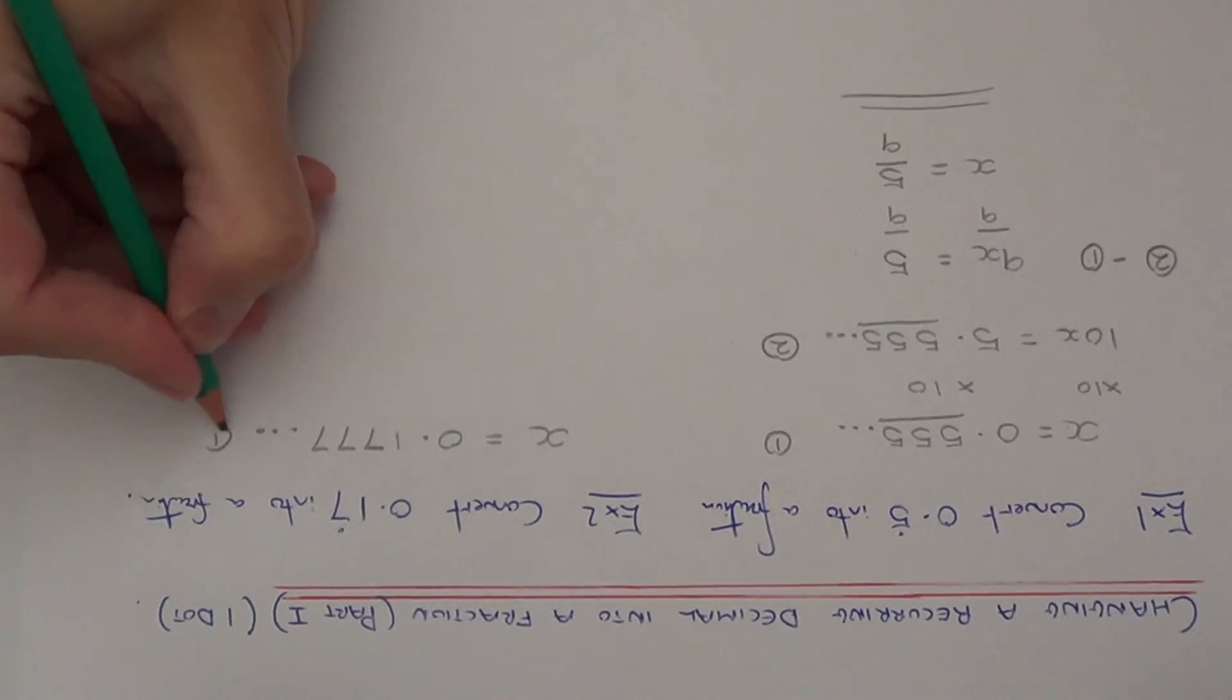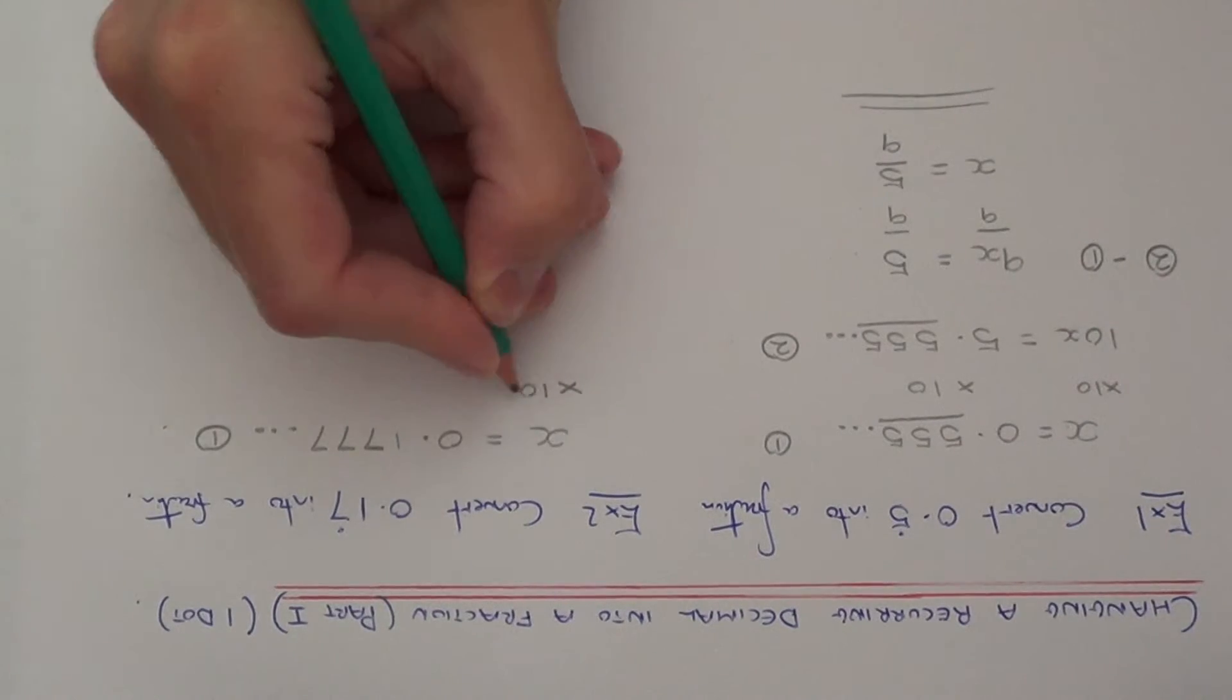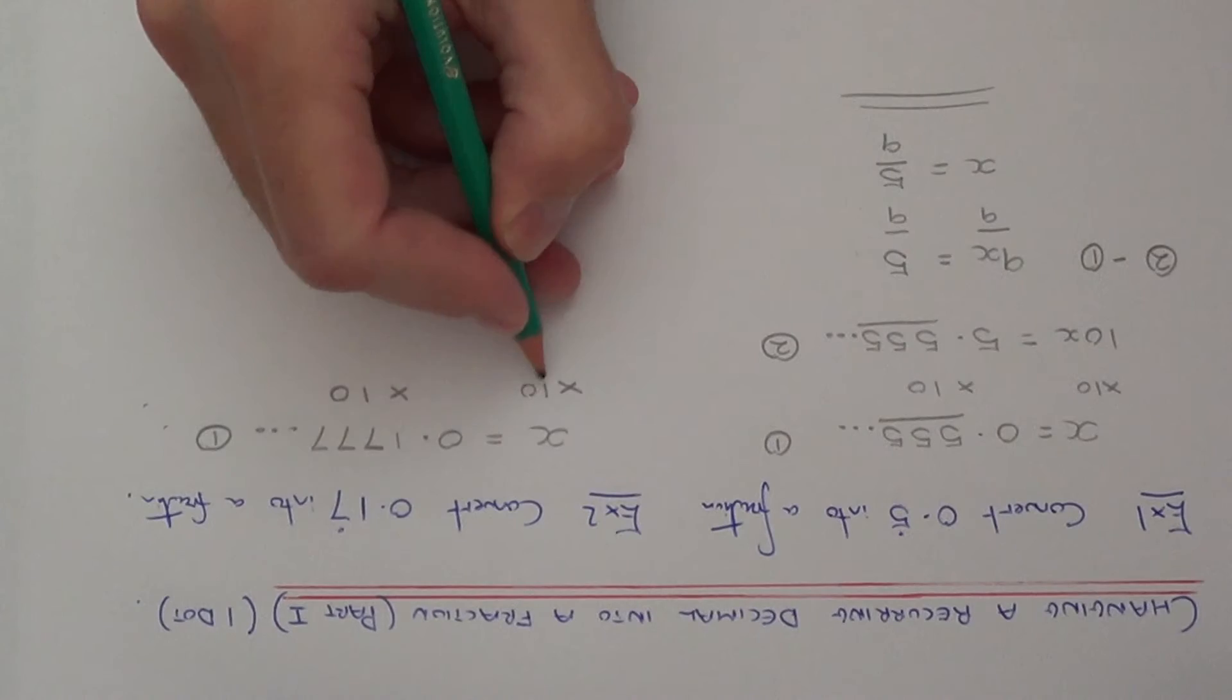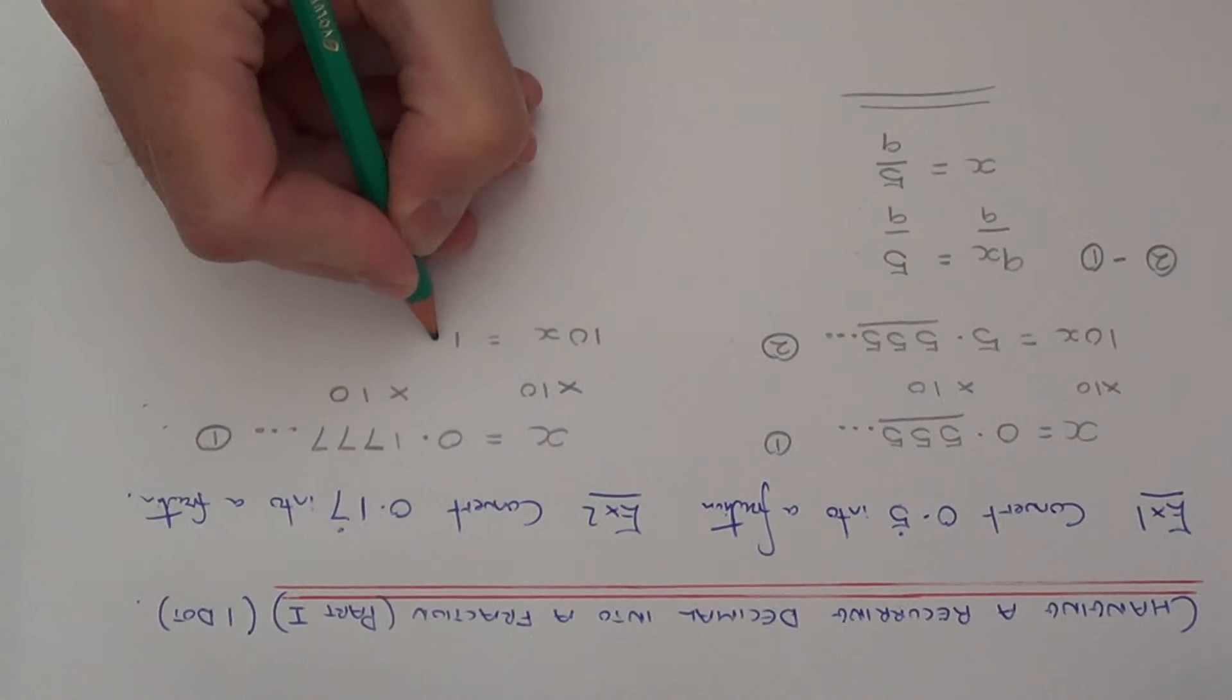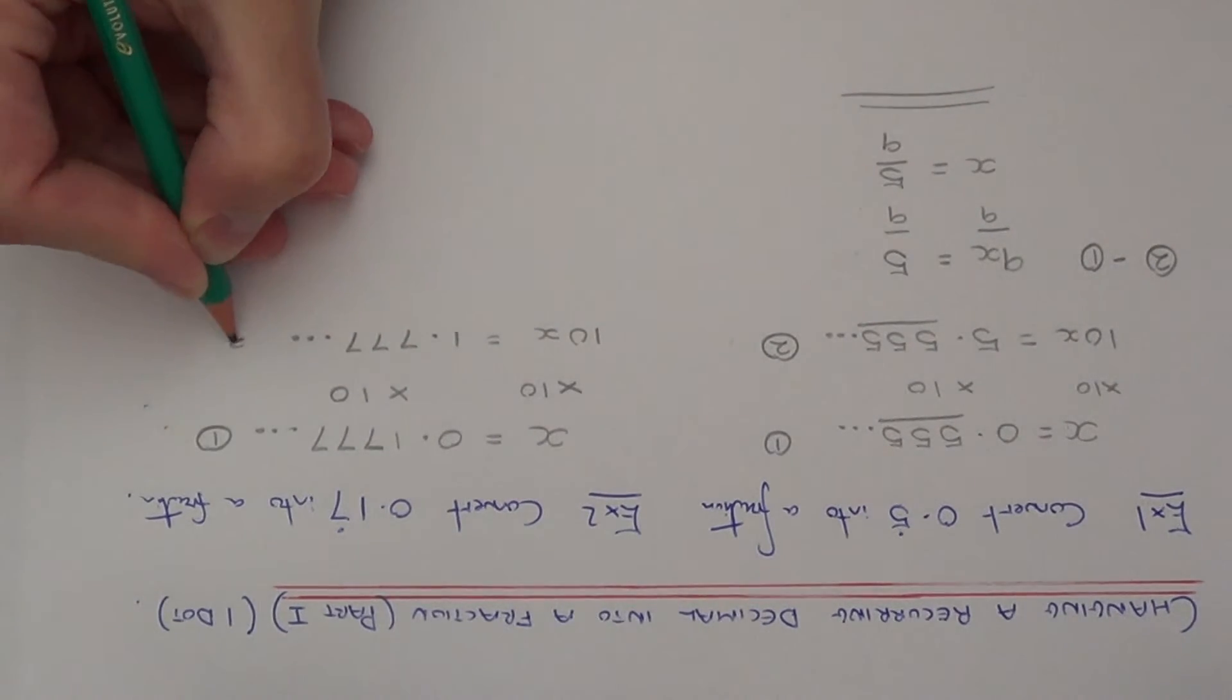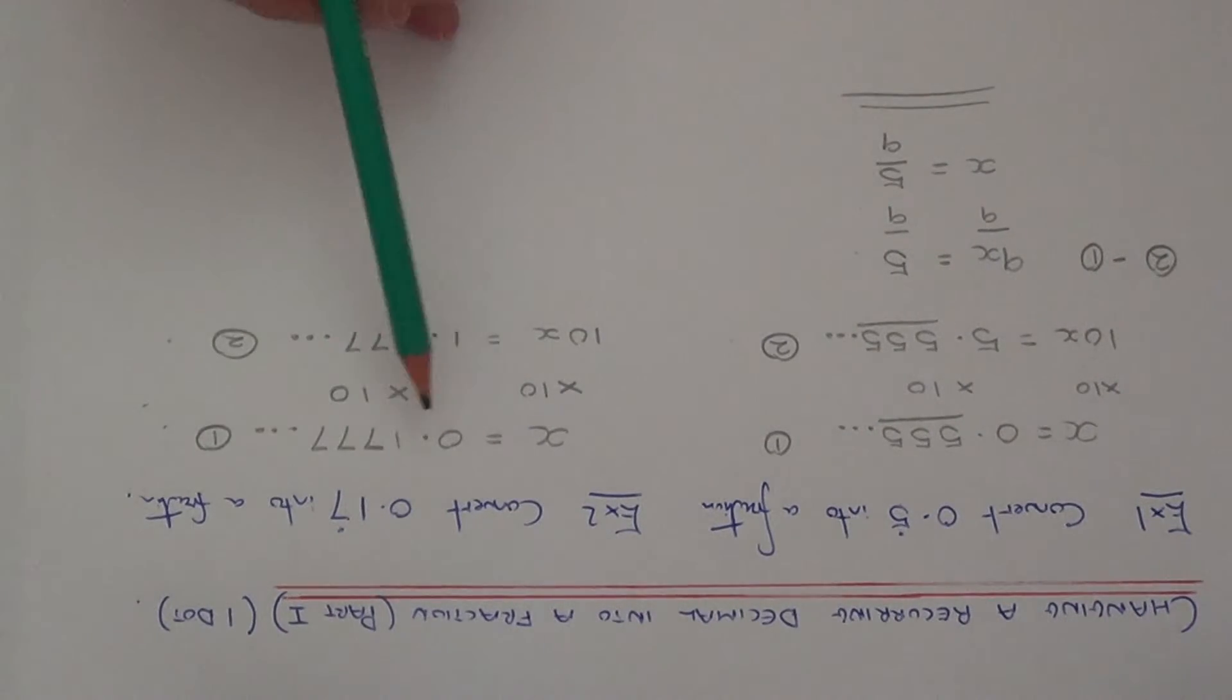Like before then I'm going to multiply my first equation by 10. So x times 10 is 10x. And if I multiply this by 10 I get 1.777 etc. Now if you notice, the bits after the decimal point don't match. So I'm not going to subtract the two equations this time, because I'll just end up with a nasty decimal.